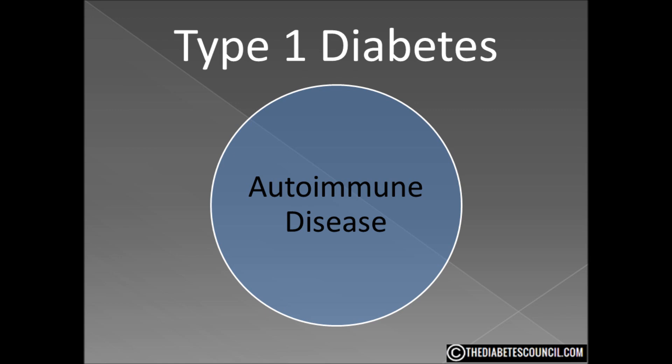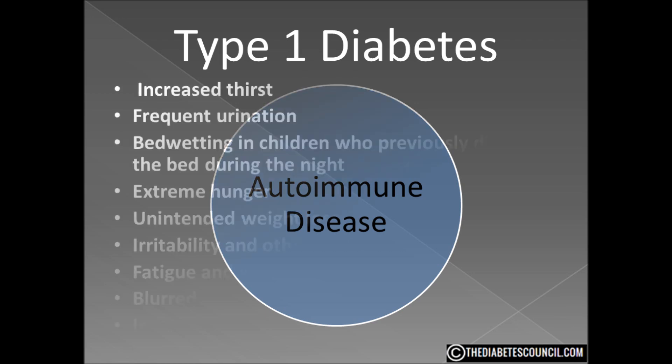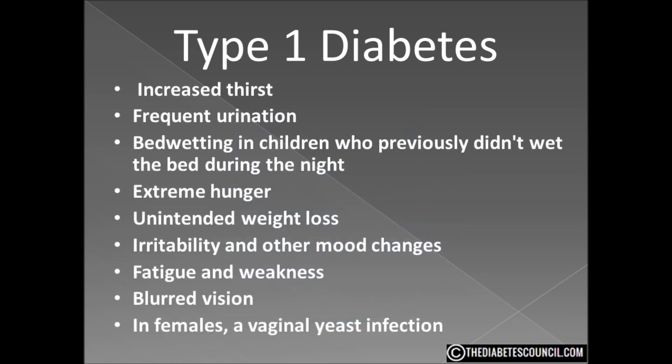Type 1 diabetes most commonly starts in people under the age of 20 but may occur at any age. According to the Mayo Clinic, the most common symptoms of type 1 are increased thirst, frequent urination, bed wetting in children who previously didn't wet the bed during the night, extreme hunger, unintended weight loss, irritability and other mood changes, fatigue and weakness, blurred vision, and in females a vaginal yeast infection.